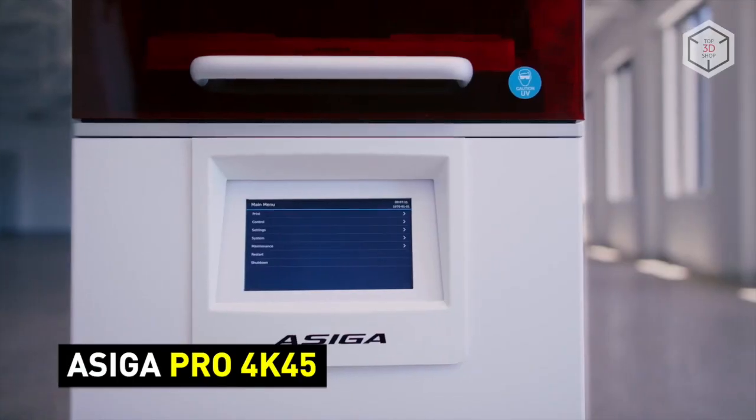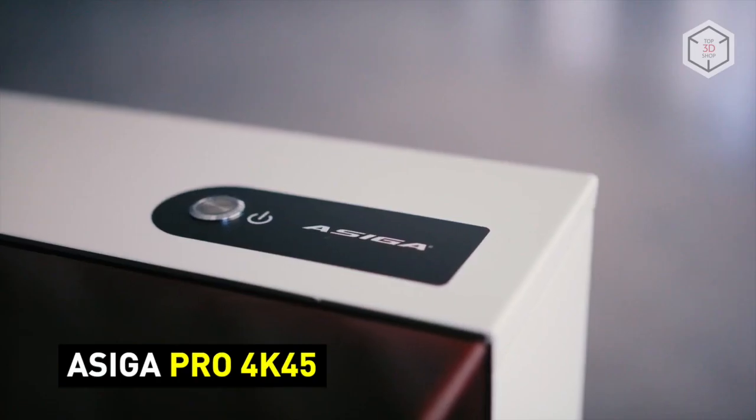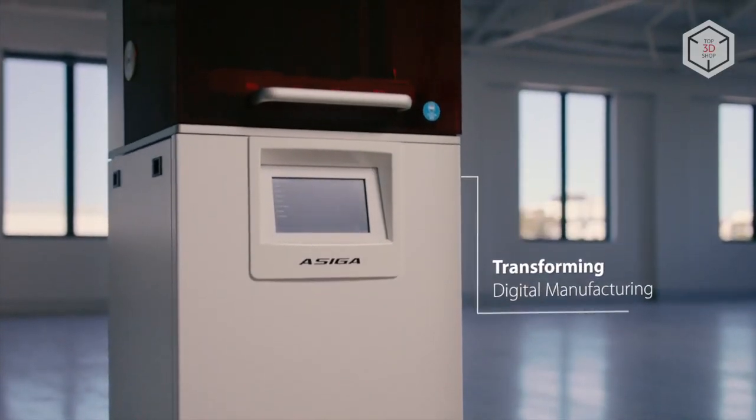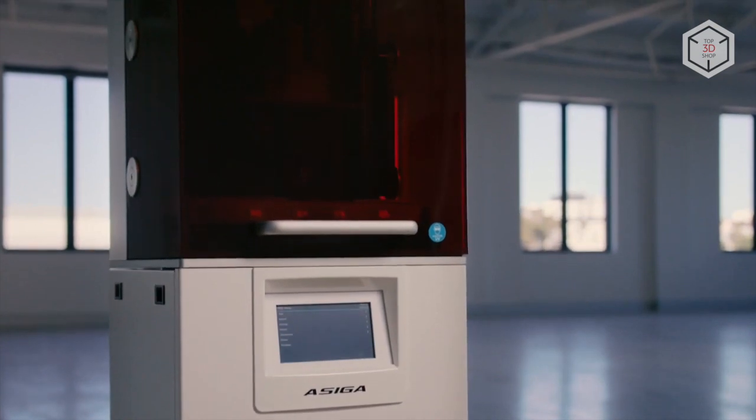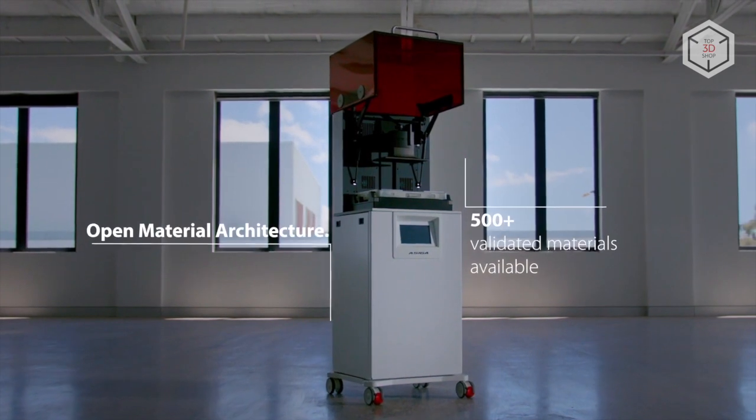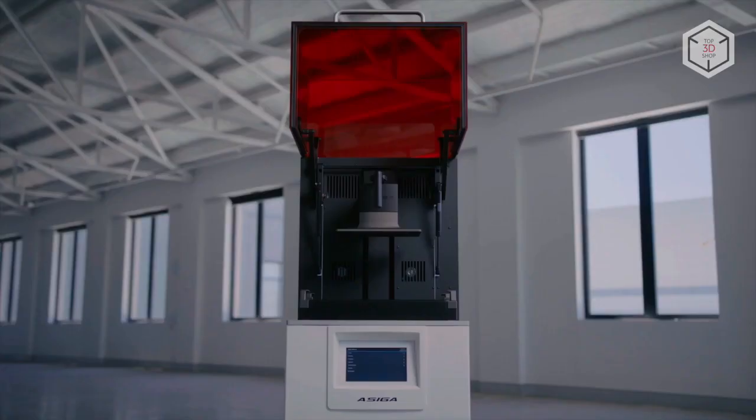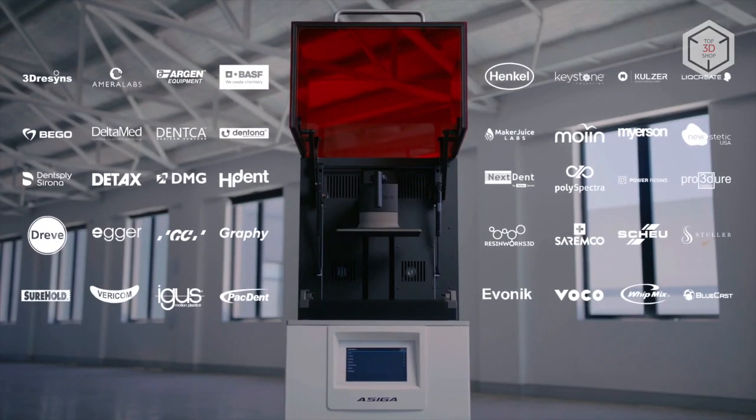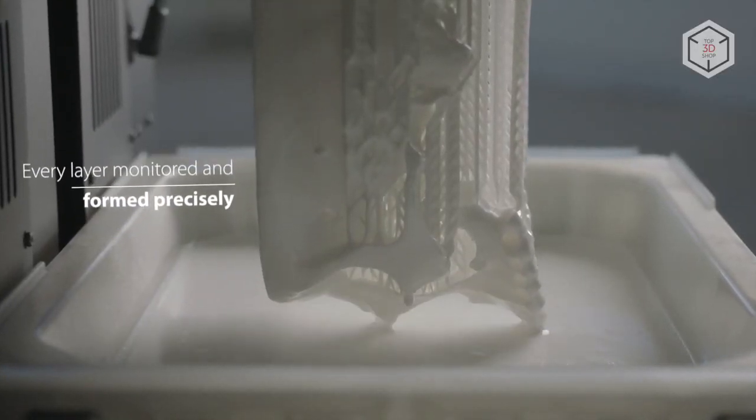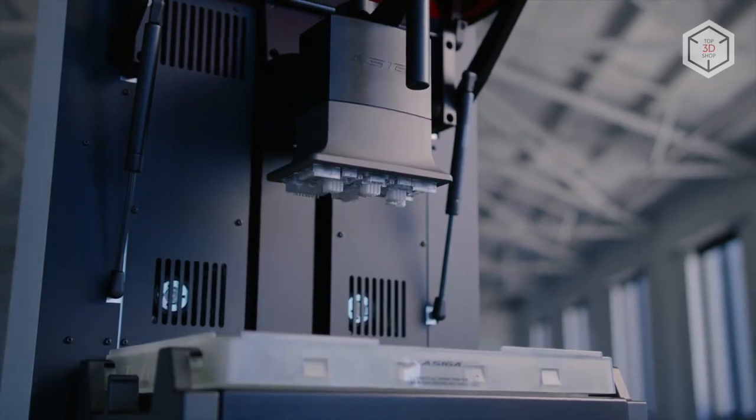The Asiga Pro 4K45 is a DLP-based professional 3D printer used primarily in digital dentistry, audiology production and jewelry remanufacturing. Featuring a build volume of 122 by 69 by 200 millimeters, the Pro 4K45 can print with a wide range of materials produced by any manufacturer. The proprietary smart positioning system ensures the proper forming of every layer providing consistent and accurate printing results.